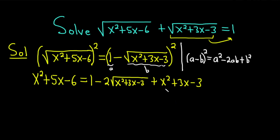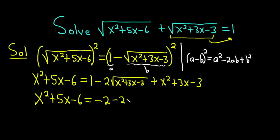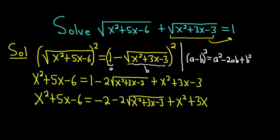Now we can combine some like terms on the right-hand side — namely, we can combine the 1 and the minus 3. So we have x squared plus 5x minus 6 equals, and then 1 minus 3 gives minus 2, so we have minus 2 times the square root of x squared plus 3x minus 3, plus x squared plus 3x. We still have a square root, so let's try to move everything over to isolate it.